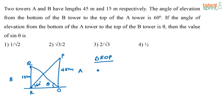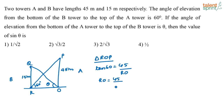In triangle ROP, I can say tan 60 is equal to 45 divided by RO. So RO is equal to 45 divided by tan 60. What is tan 60? It is root 3. So this length RO is 45 divided by root 3.